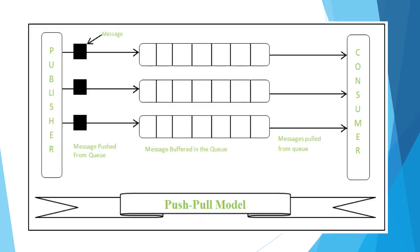Here is the diagrammatical representation of the Push and Pull model. The publisher creates the message and pushes it into the queue. The consumer who wants the data can pull the data from the queue.